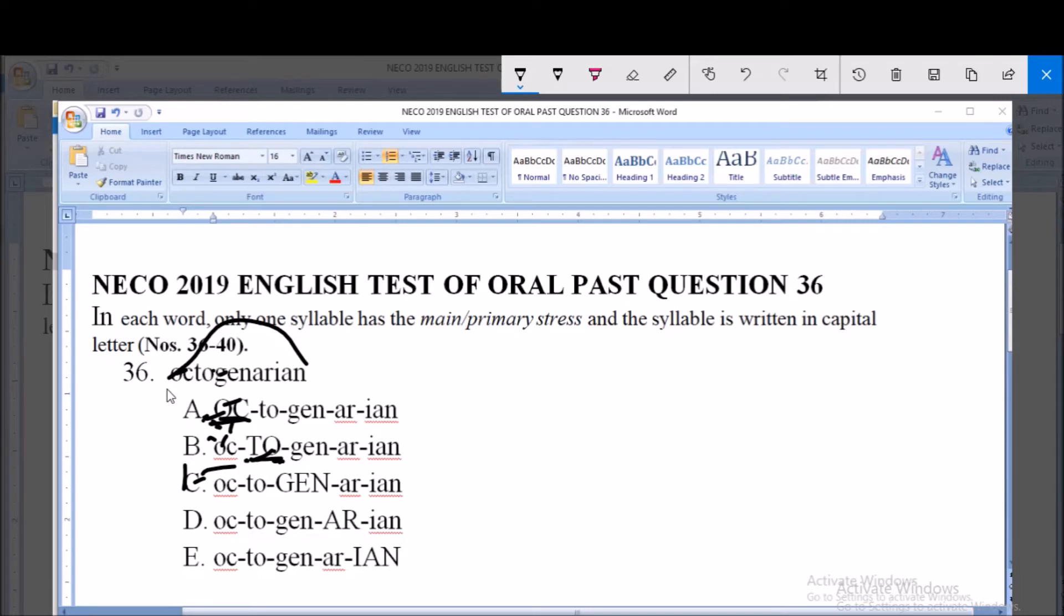Option C, the stress cannot be on GEN. If you pronounce the word carefully and listen to the pronunciation, when you get to option D, AR is stressed. That's why it is written in capital letters there.